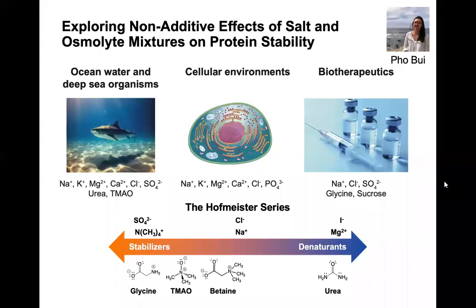Hello, my name is Fo Bui. I am a fifth-year graduate student in the Kramer Group. My research focuses on understanding how salt and osmolytes affect protein stability in solution.